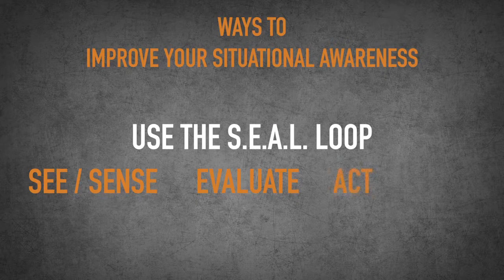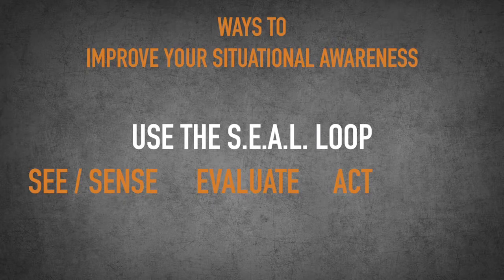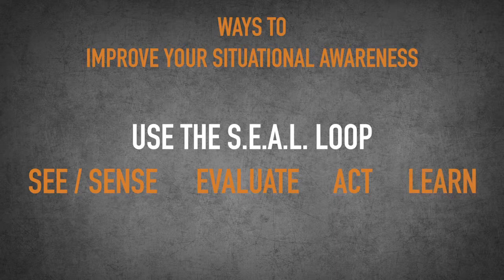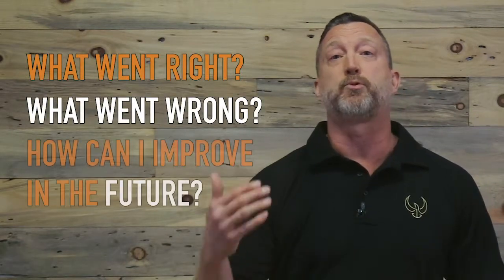The A in the SEAL loop is to act. Now that you've seen or sensed what's happening around you and evaluated what you need to do, you need to take action. That action depends on how you evaluated the situation. The L is what makes this a true loop — it loops it back around and you need to learn from each of your experiences. That whole part of training is getting that loop back around to ask: what went right, what went wrong, and how can I improve in the future? That is the SEAL loop and that's the number one way to improve your situational awareness.